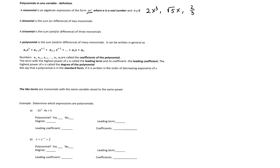For example, 2x cubed plus one-fourth is a binomial. A trinomial is the sum and/or difference of three monomials. For example, negative 3x to the fifth plus 2x squared plus one.